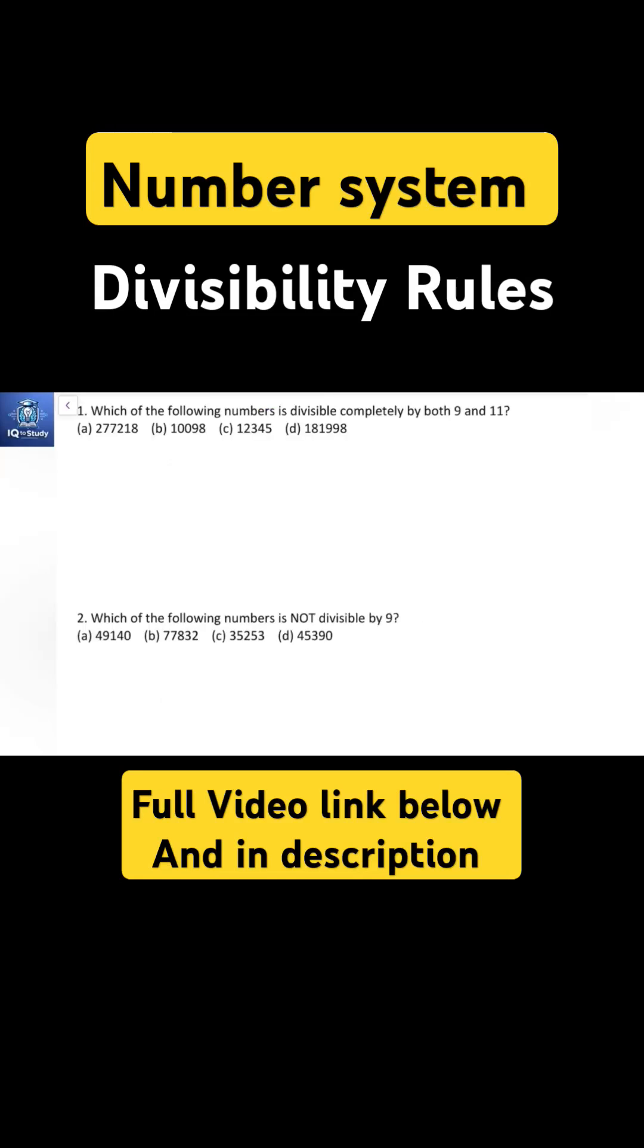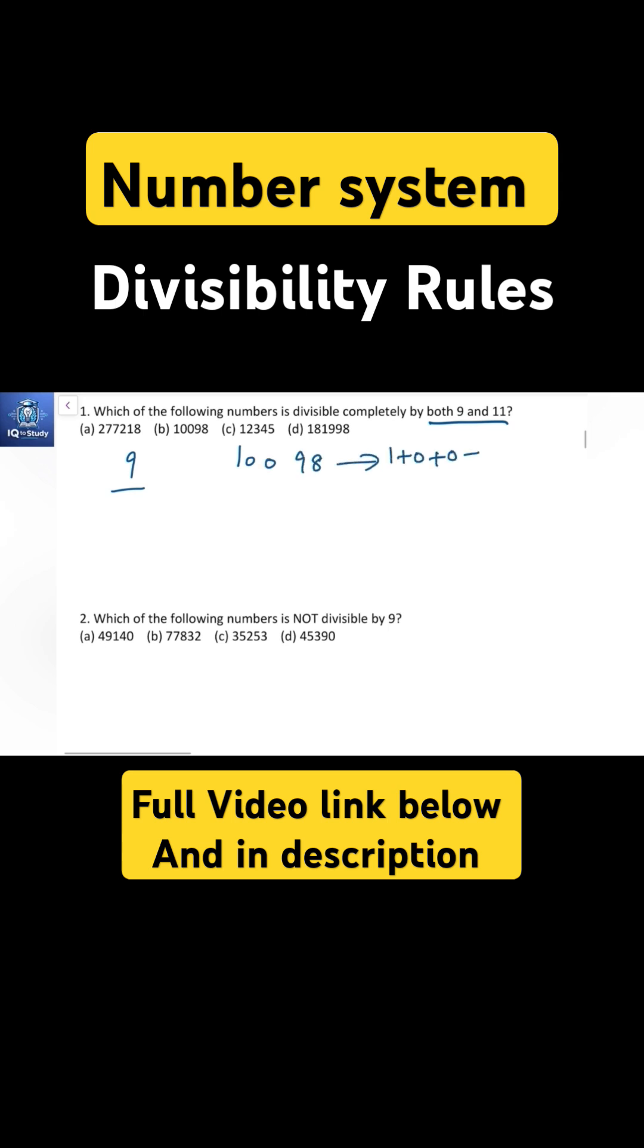Into the problems: which of the following numbers is divisible completely by both 9 and 11? We know that for 9, the sum of digits of a number is divisible by 9. Let's check option B: 10098. Its sum is 1+0+0+9+8 = 18. 18 is divisible by 9.